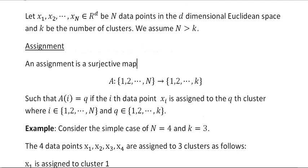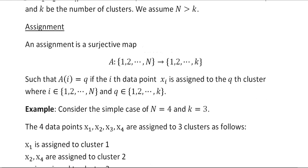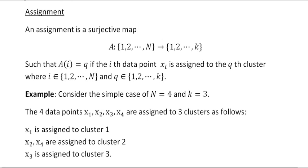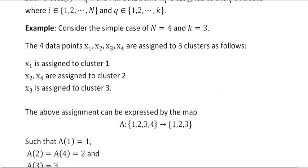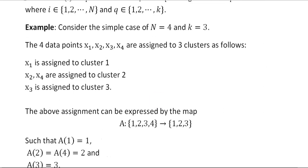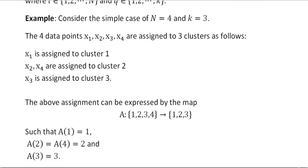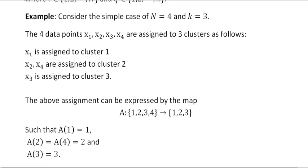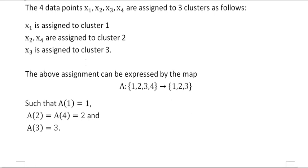Mathematically speaking, an assignment is a surjective map from the index set of the data points to the index set of the clusters, such that if the i-th data point xi is assigned to the q-th cluster, then a(i) equals q. For example, if there are four data points assigned to three clusters: x1 is assigned to cluster 1, x2 and x4 to cluster 2, and x3 to cluster 3 — that assignment is expressed by this map.